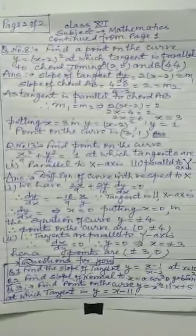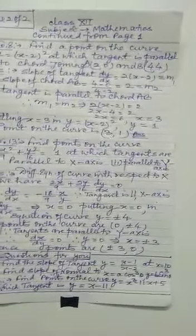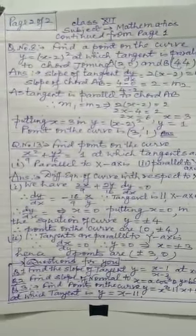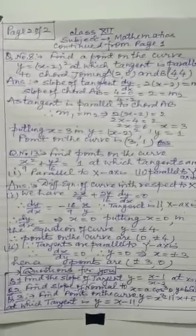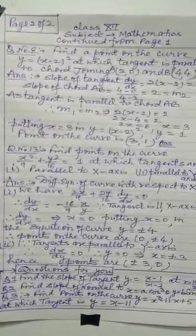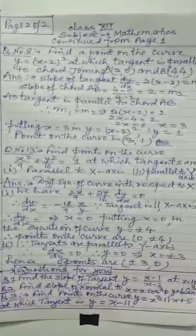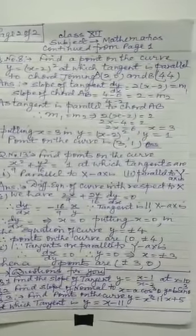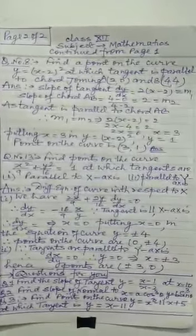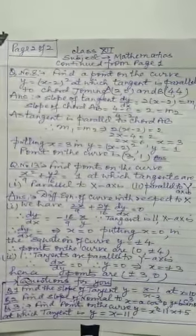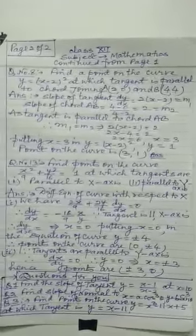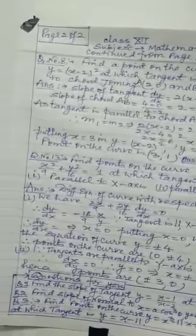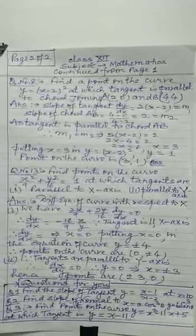Question number 8: find a point on the curve y = (x − 2)² at which the tangent is parallel to the chord joining points A(2, 0) and B(4, 4). The slope of the tangent is dy/dx = 2(x − 2), call it m1. The slope of chord AB using (y2 − y1)/(x2 − x1) comes out to be 2, call it m2. Since they are parallel, m1 = m2, giving x = 3, and putting x = 3 in the curve gives y = 1. So the point is (3, 1).